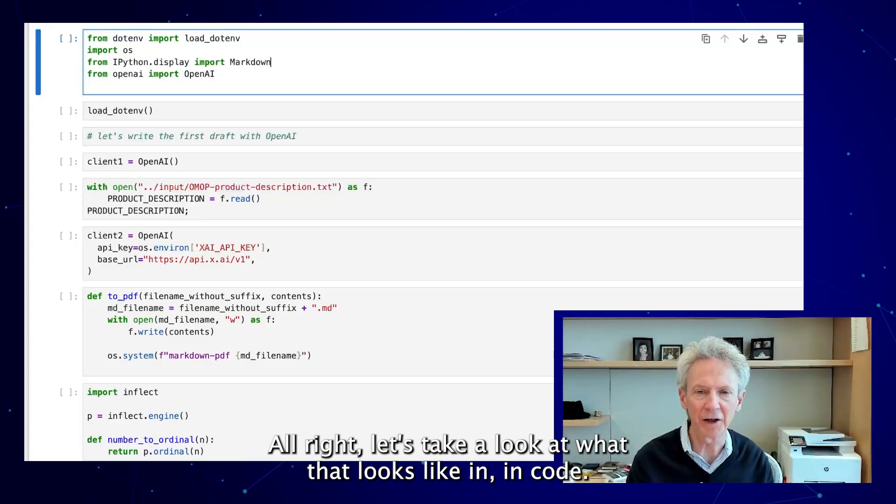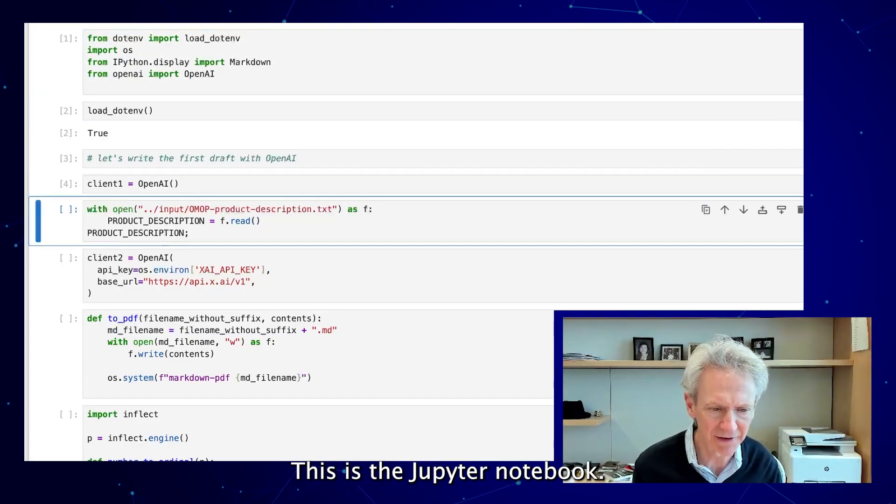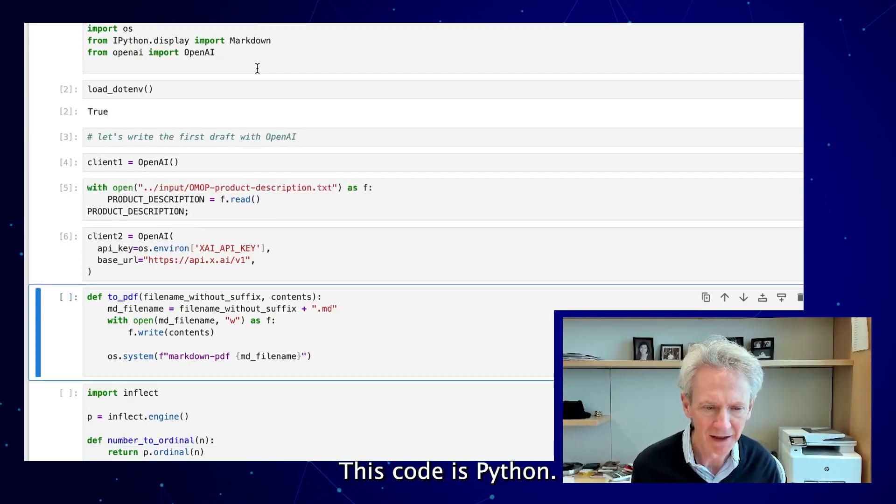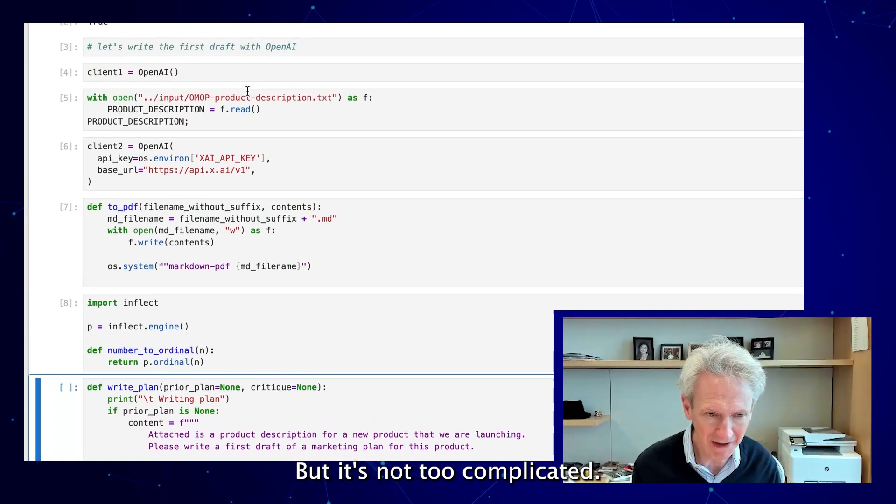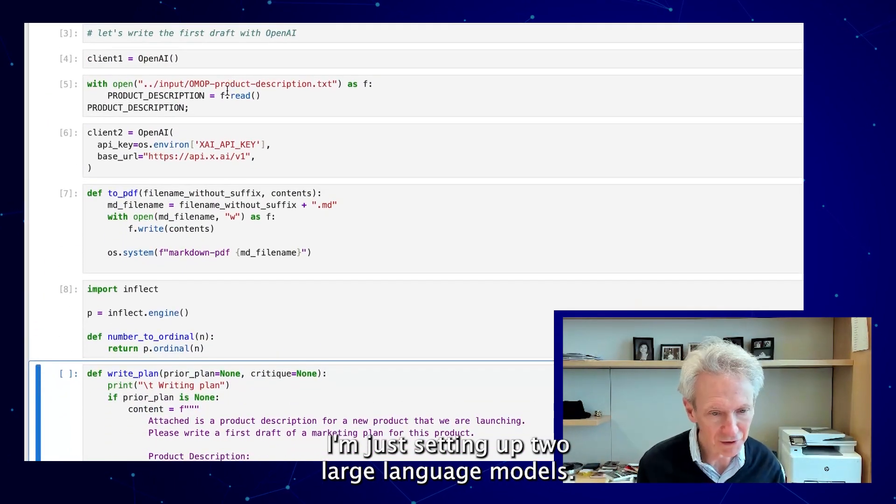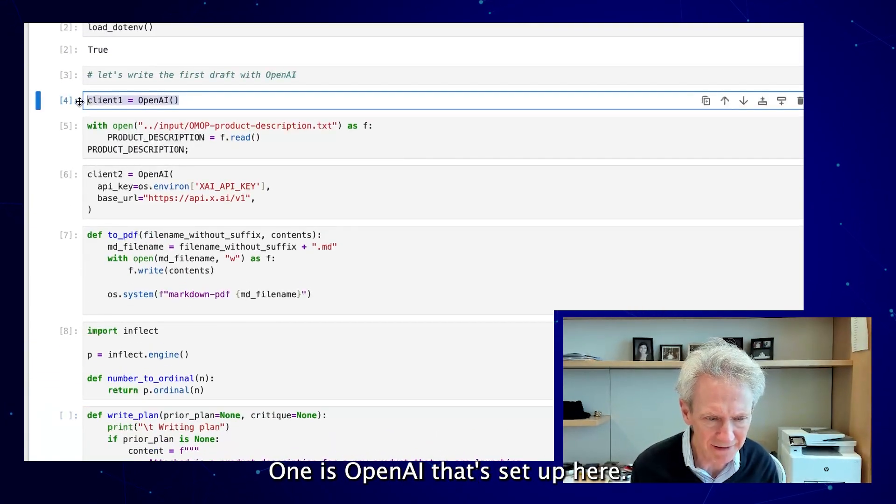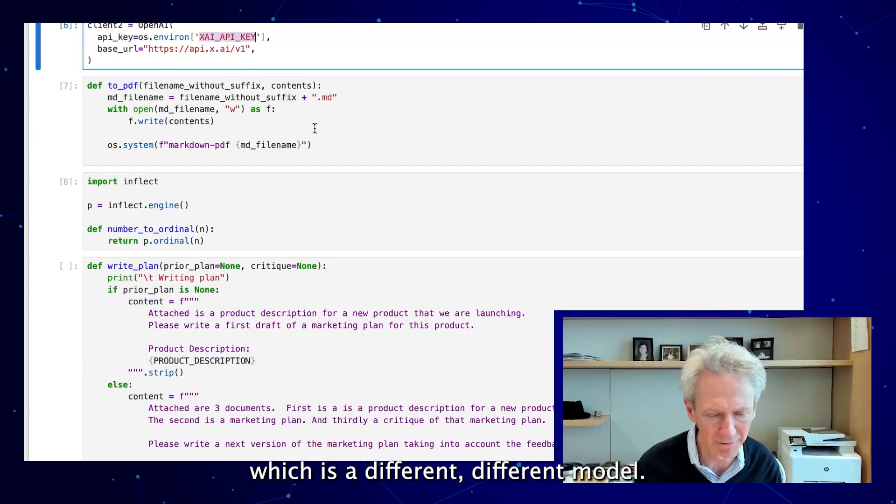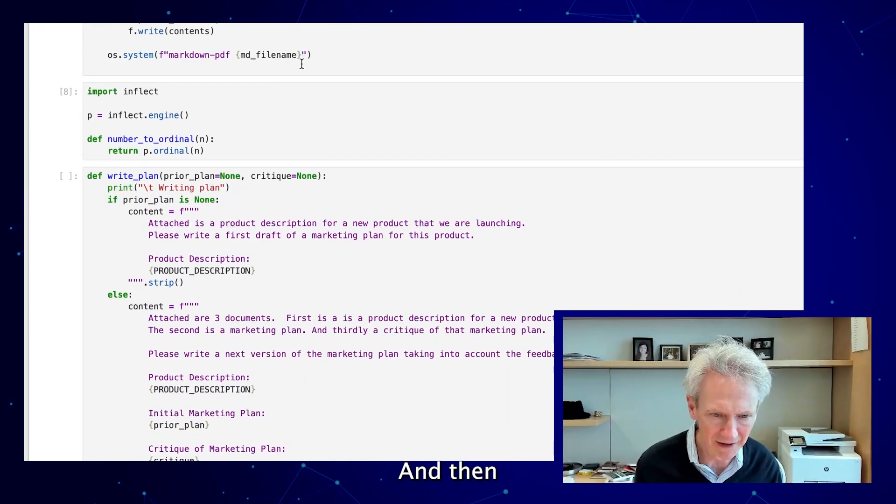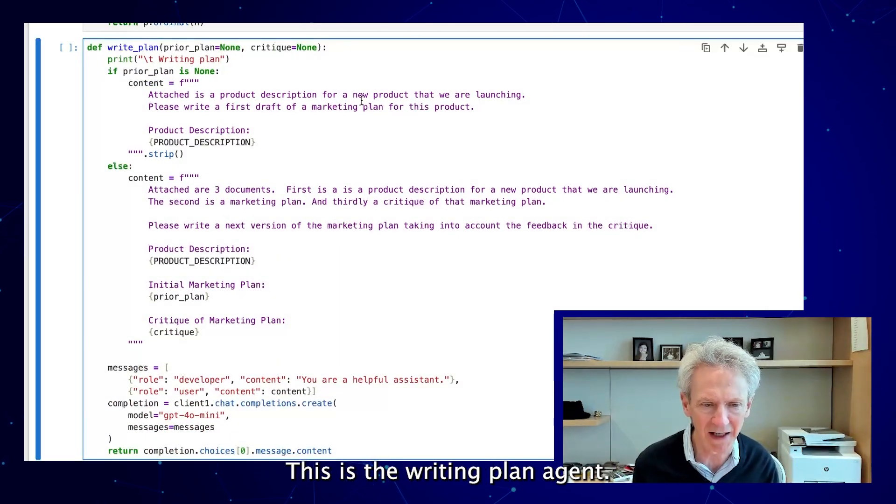All right, let's take a look at what that looks like in code. So forget these top cells, this is a Jupyter notebook. This code is Python, but it's not too complicated. I'm just setting up two large language models. One is OpenAI, that's set up here, and the other is XAI, which is a different model.